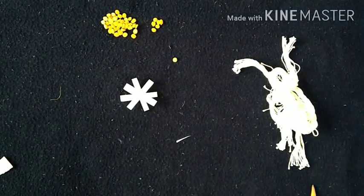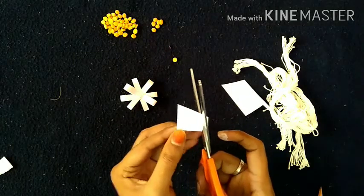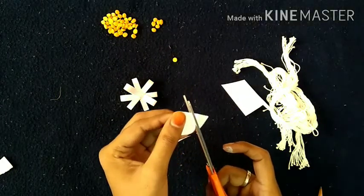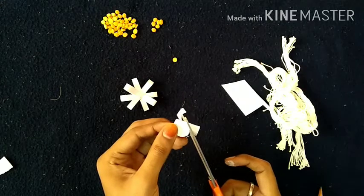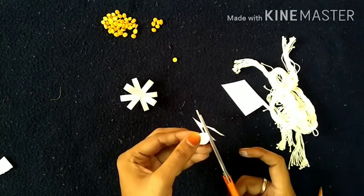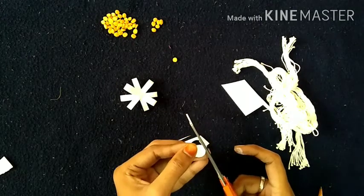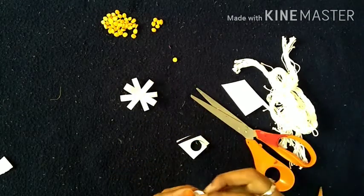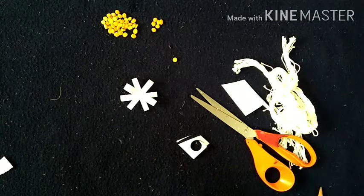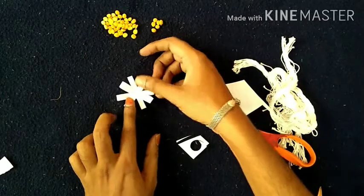Again I am taking one piece of paper. Now I am putting here one small circle. After cutting this paper, take glue. Apply glue and stick this one here in the middle.